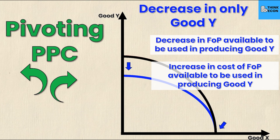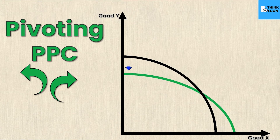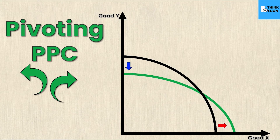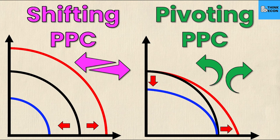You might wonder: is it possible for something to happen to both intercepts at the same time, perhaps moving in different directions? The answer is yes. For example, we could have a decrease in the y-intercept and an increase in the x-intercept simultaneously. This would mean some shock decreased the total amount of good Y we can produce but increased the total amount of good X. We'll now move into examples covering both shifts and pivots of the PPC.